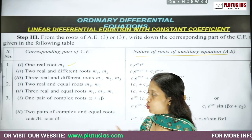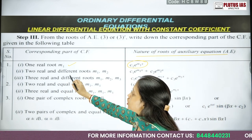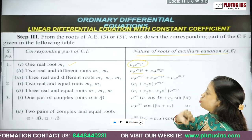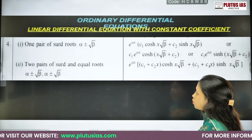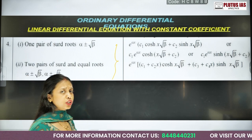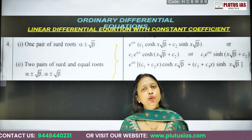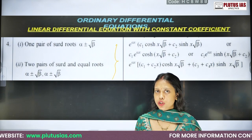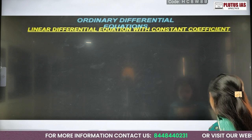If you have one real root m1 only, the solution is c1 e raised to the power m1·x. If you have two real and different roots m1 and m2, then the solution is c1·e^(m1·x) plus c2·e^(m2·x). You need to memorize this table, but don't worry — just go through it and try questions. When you do more and more questions and revisit this table, you'll eventually learn which kind of roots give which kind of complementary function.